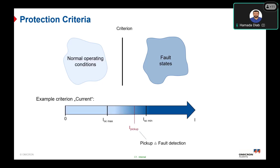If we take the current as a protection criteria, there is a gap between the maximum load current (maximum operating current) and the minimum short circuit current. There is a gap between both of them to distinguish between the normal operating state and the fault state.